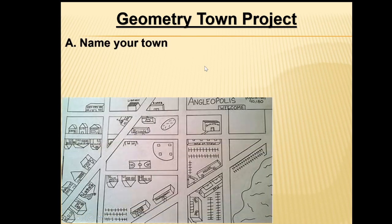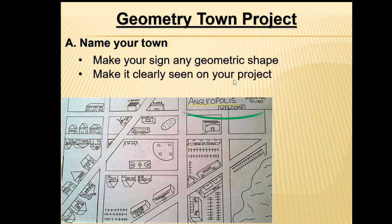First things first, it says name your town. This is just an example of one of the towns submitted by a student around your age, fourth or fifth grade. When you name your town, you want to make sure that your sign is any geometric shape and make sure it is clearly seen on your project. This particular student chose to use a rectangle and named their town Angleopolis — the name highlighted in yellow and the rectangle sign circled in green. That should take care of letter A.